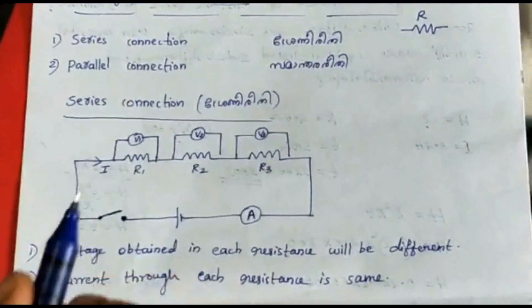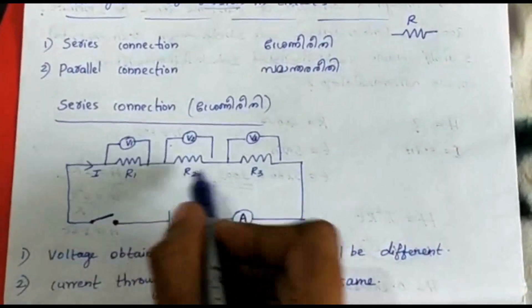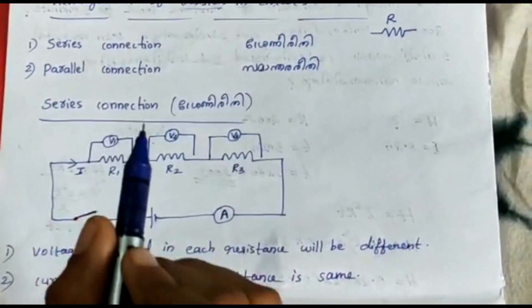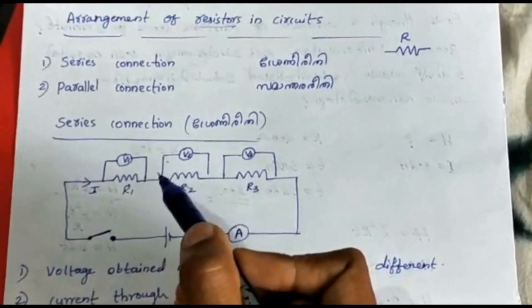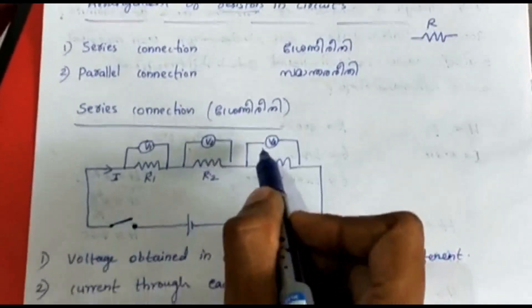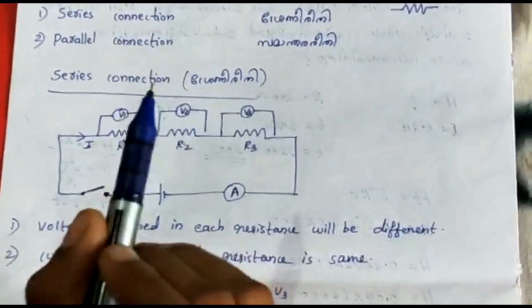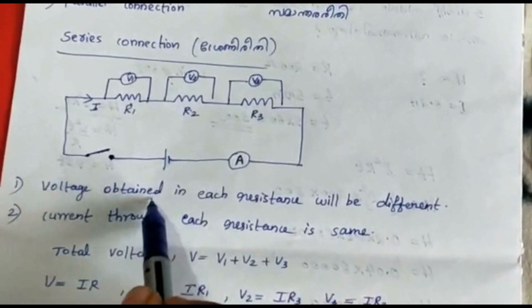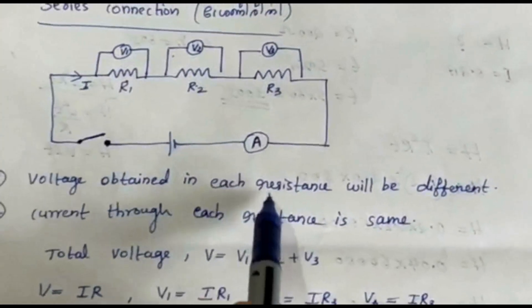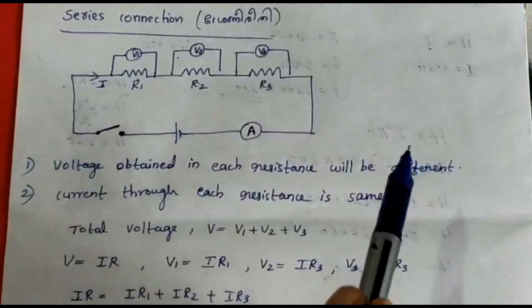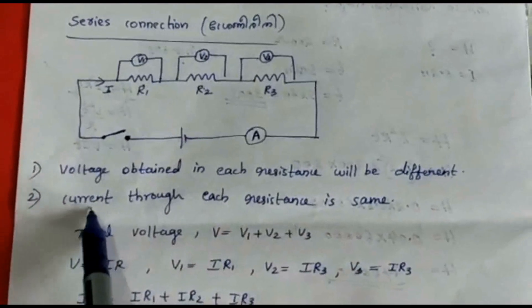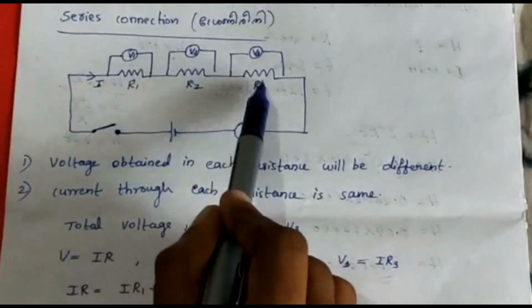In a series connection of 3 resistors, the current I is the same through all. The voltage V is split — V1 across R1, V2 across R2, V3 across R3. The voltage obtained across each resistance will be different. The current through each resistance is the same.